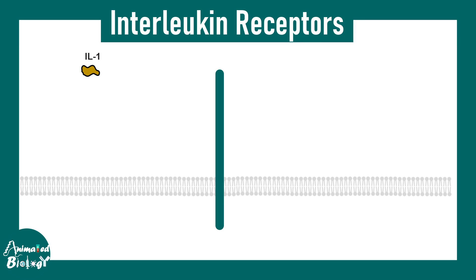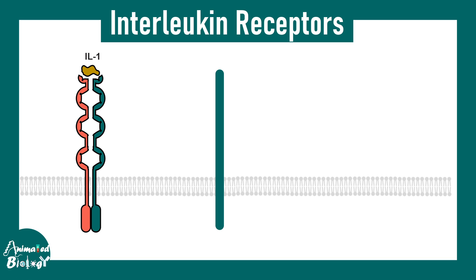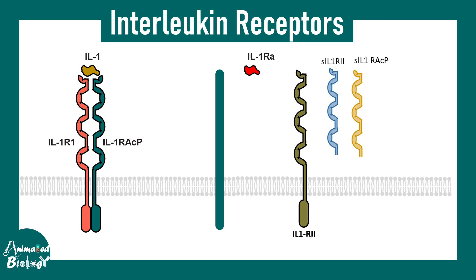Interleukin receptor signaling is modulated in a strategic way. There are inhibitory ligands such as interleukin 1RA which can compete with interleukin 1 for the receptor and inhibit interleukin-mediated signals. Other receptors such as interleukin 1R2, secreted interleukin 1R2, and secreted IL-1RACP can all attenuate signaling from the main interleukin receptor. These concepts will become important when we discuss the clinical perspective.